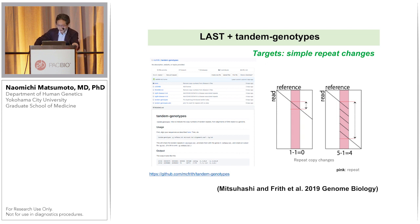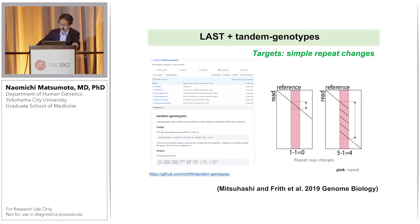My colleague Mitsuhashi and Friis developed an important informatic method called LAST Tandem Genotypes, which is truly useful for picking up expanded simple repeat changes. Here is a dot plot: the right graph shows four or five times repetitive regions, compared to a one-time control.